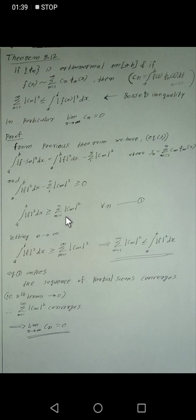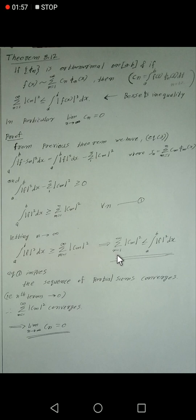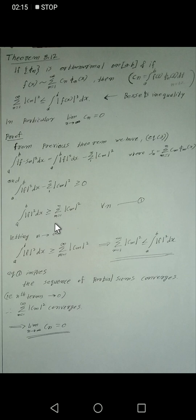This is true for every n. Therefore, ∫ from a to b of |f(x)|² dx is greater than or equal to σ from n=1 to infinity of cₙ². So ∫ from a to b of |f(x)|² dx is greater than or equal to ∫ from a to b of |f(x)|² dx, and therefore cₙ converges to 0.